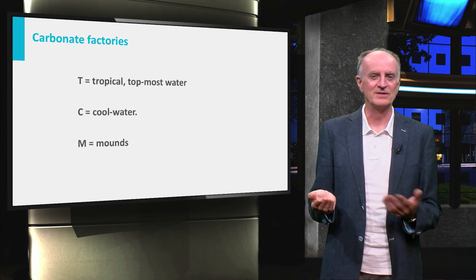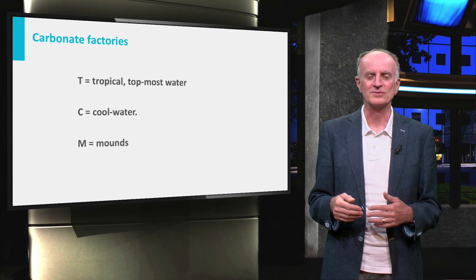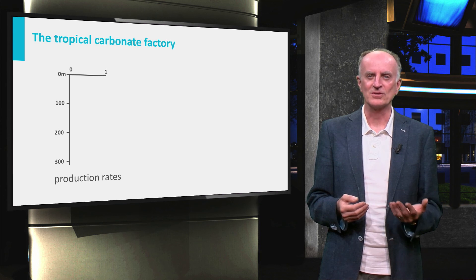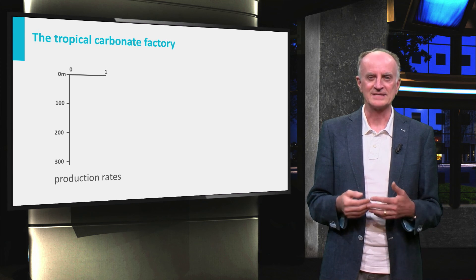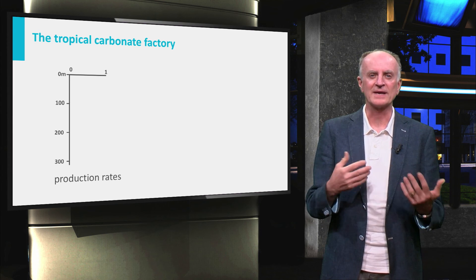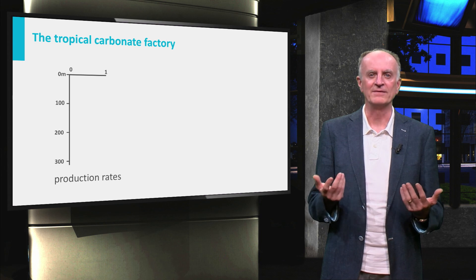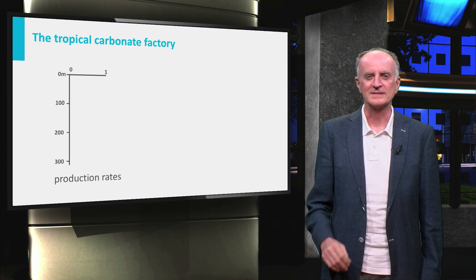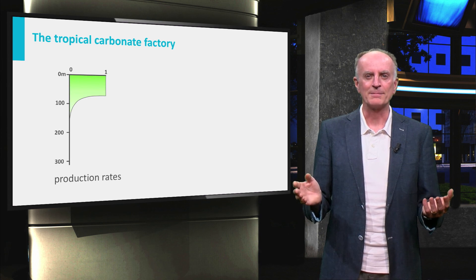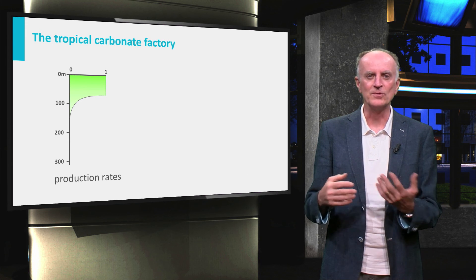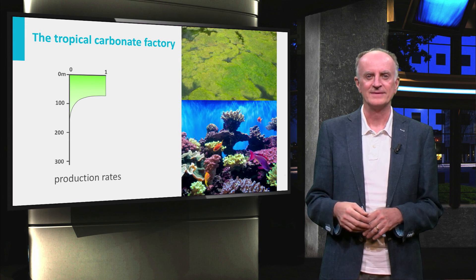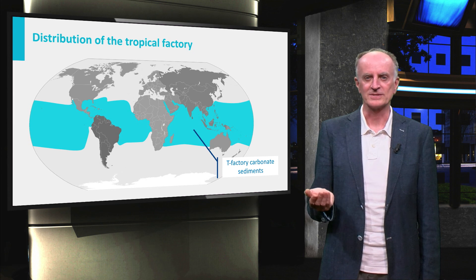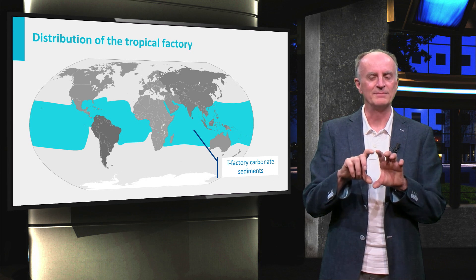Not surprisingly, living conditions in the tropics are ideal for most carbonate-producing organisms. The tropical factory is essentially controlled by light. In these factories, light is abundant and organisms directly or indirectly dependent on photosynthesis thrive. Production rates are very high in the photic zone and basically go down to zero below it. These are the domains of algal mats in quiet regions, and of corals and ooids where water energies are high. The distribution of the tropical factory is directly related to the intensity of light and to temperatures, and is typical for the domain between the tropics.